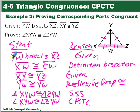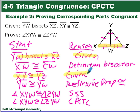Here's the proof. We're told that YW bisects XZ — that's given. Because of that, XW is congruent to ZW by the definition of bisector. We're also given that XY is congruent to YZ. And YW is congruent to YW by the reflexive property of congruence. So we've now shown that all three sides are congruent.